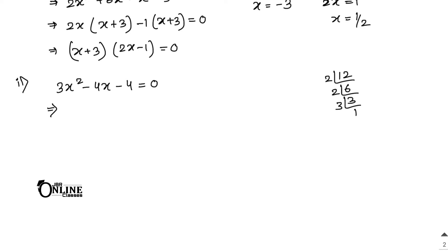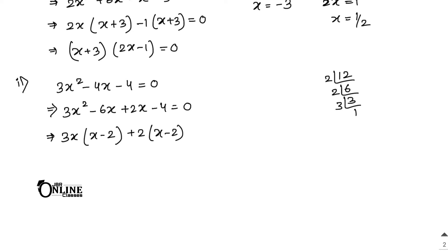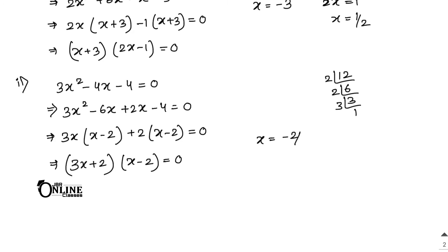Write this as 3x² - 6x + 2x - 4 = 0. Taking 3x common gives (x - 2), and taking 2 common also gives (x - 2). So (3x + 2)(x - 2) = 0. Therefore x = -2/3 or x = 2.